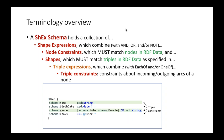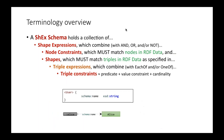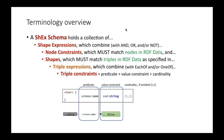Looking at the triple constraints individually, we see there's a predicate — for example, schema:name — a value constraint (in this case the datatype must be a literal of type XSD string), and an implicit cardinality. If you don't include cardinality, it's assumed to be exactly one. So without a cardinality specification, we're expecting exactly one schema:name of type XSD string.